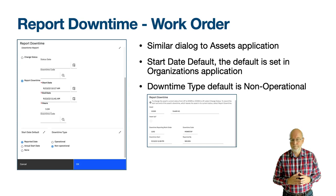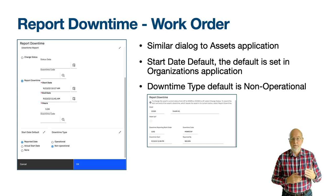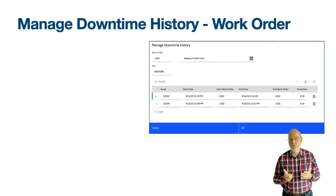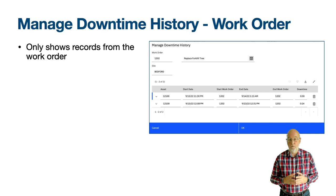There are settings in the Organisations application that can provide a warning when changing work order status to completed when the reference asset is still marked as down. The same applies if you try to change status to closed. It may seem obvious but unless the work order has an asset you will not be able to use the Report Downtime or Manage Downtime History actions. The Manage Downtime History action from the Work Order-based applications is a little different from that in the Assets application as it only shows the downtime records for the work order.